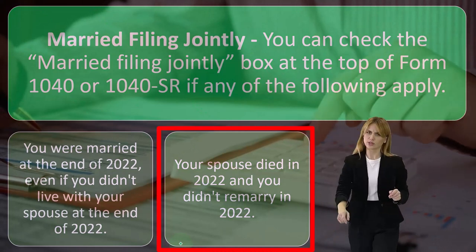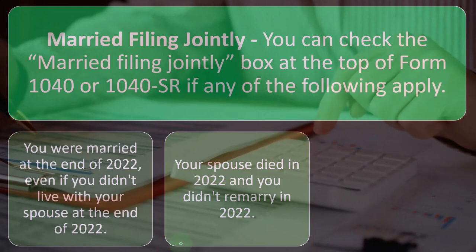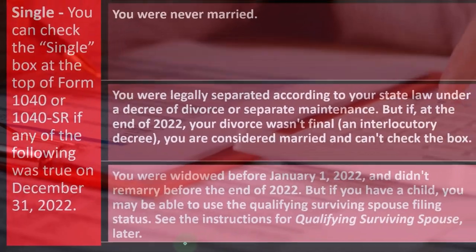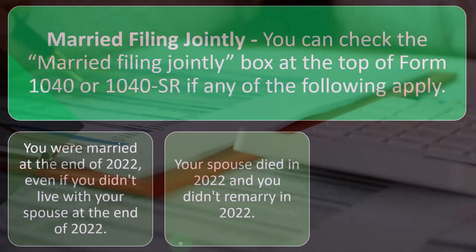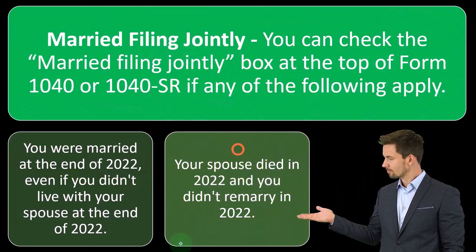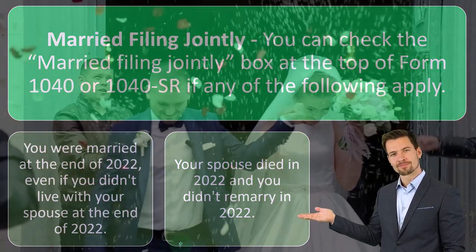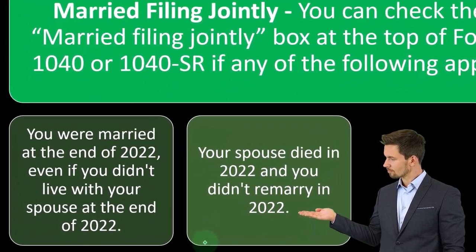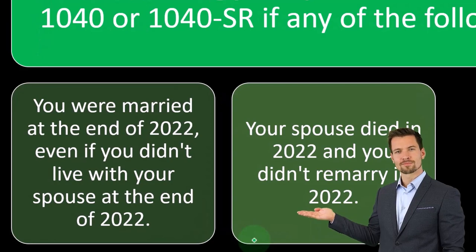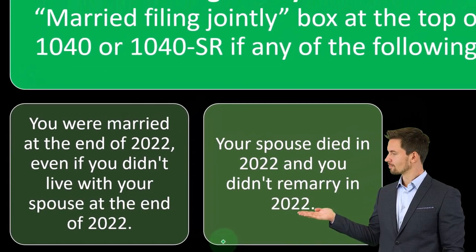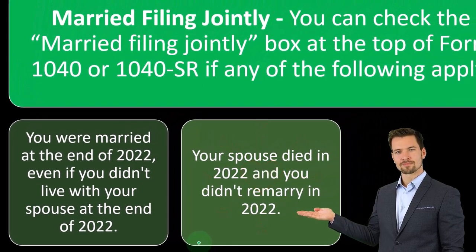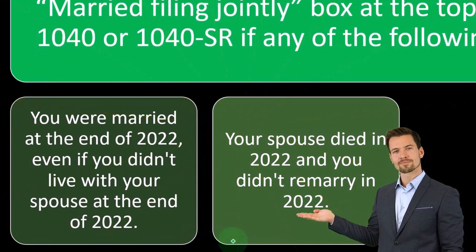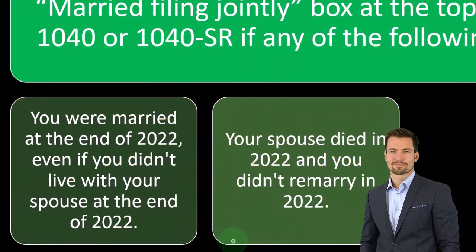Another qualifying situation is if your spouse died in 2022 and you didn't remarry in 2022. This also ties into the qualified widow and widower category. In the year of death, you can still qualify as married. It's a bit wonky: if you get married by December 31st you're considered married for 2022, and if a spouse dies any time in 2022, you don't revert — you were married and remain married through all of 2022.